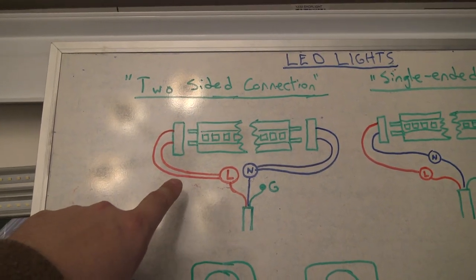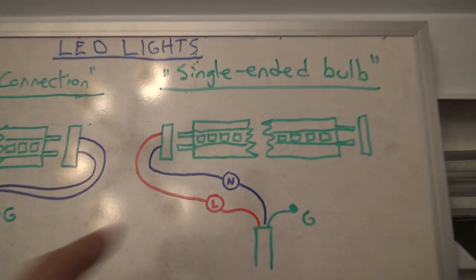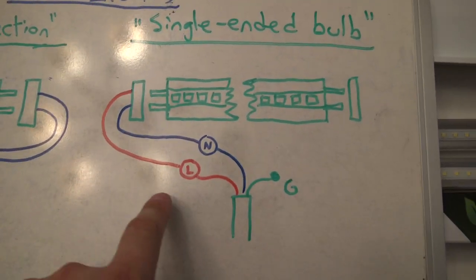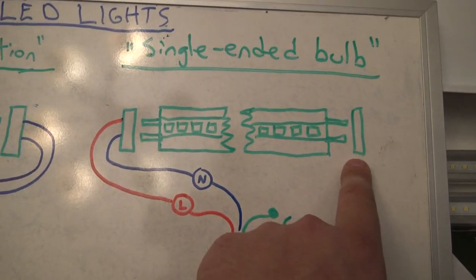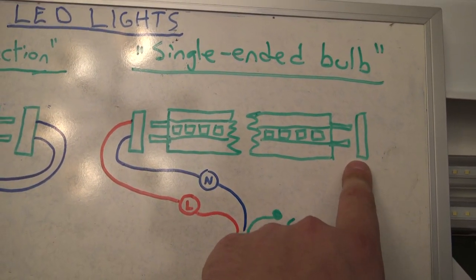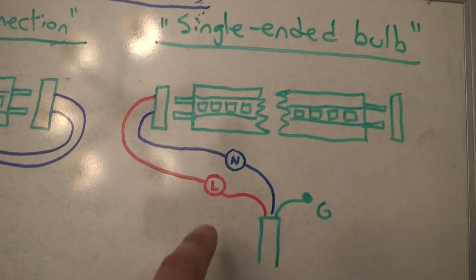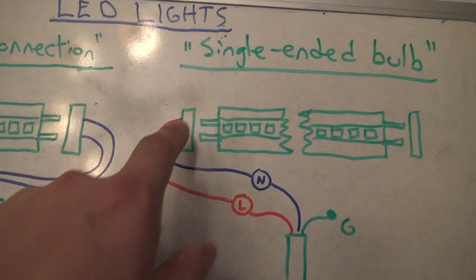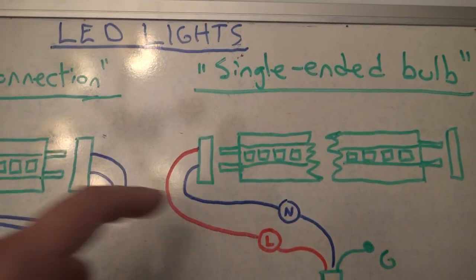So that's the first type you might run into, a two-sided connection. The other type that you might find is a single-ended bulb. And you'll notice the difference right away. There's actually a dead end to the bulb. This end doesn't get any power. It doesn't need any wires whatsoever. Because you're taking the load, and you're taking your neutral, and they're going to the two pins or the two sockets on one side of the bulb, and that's it.